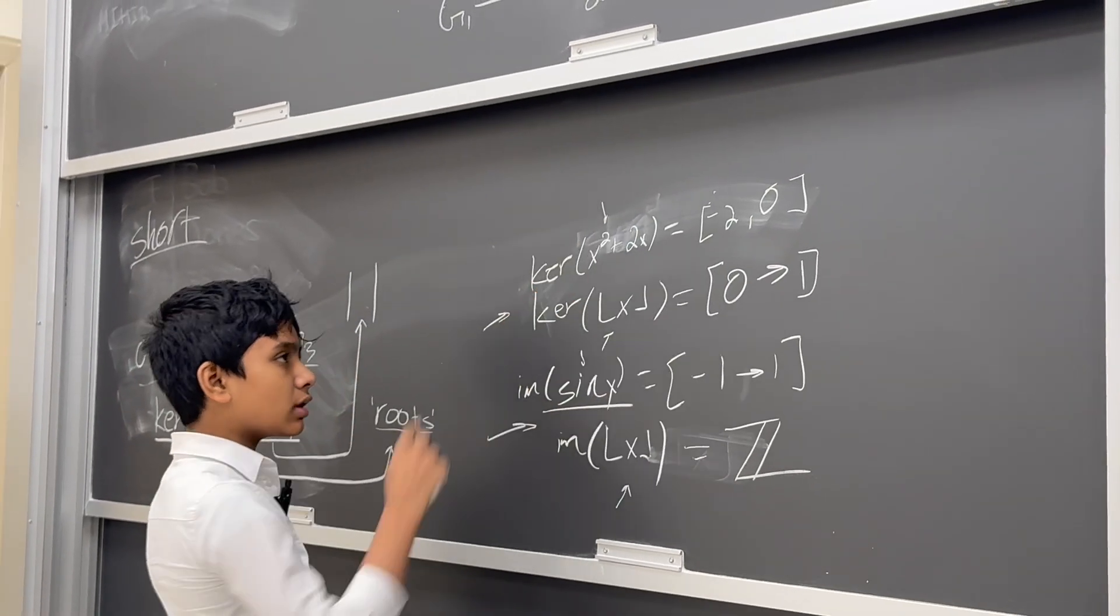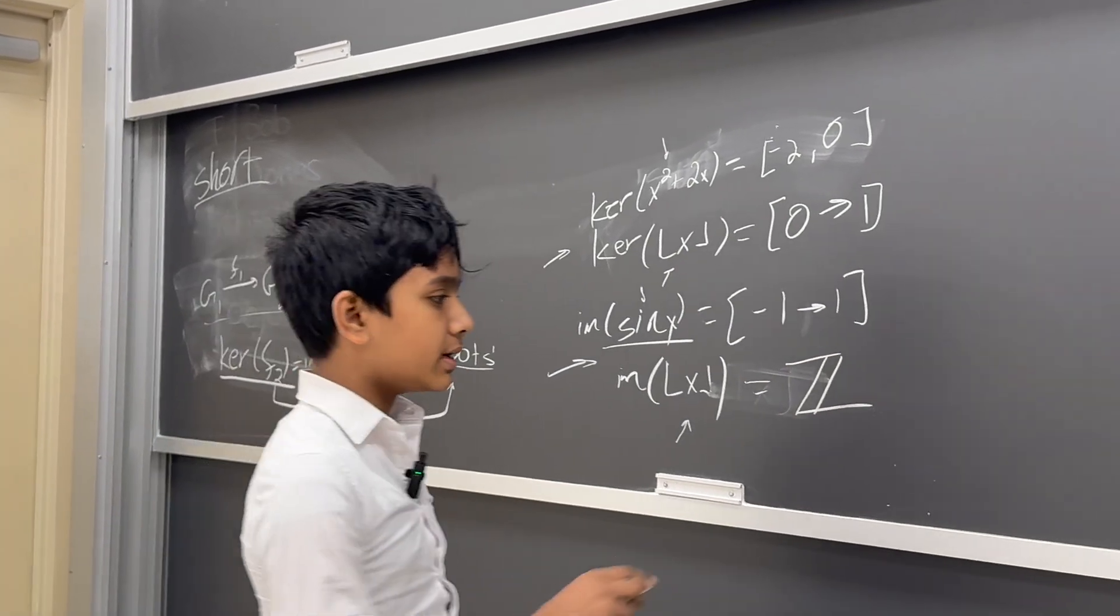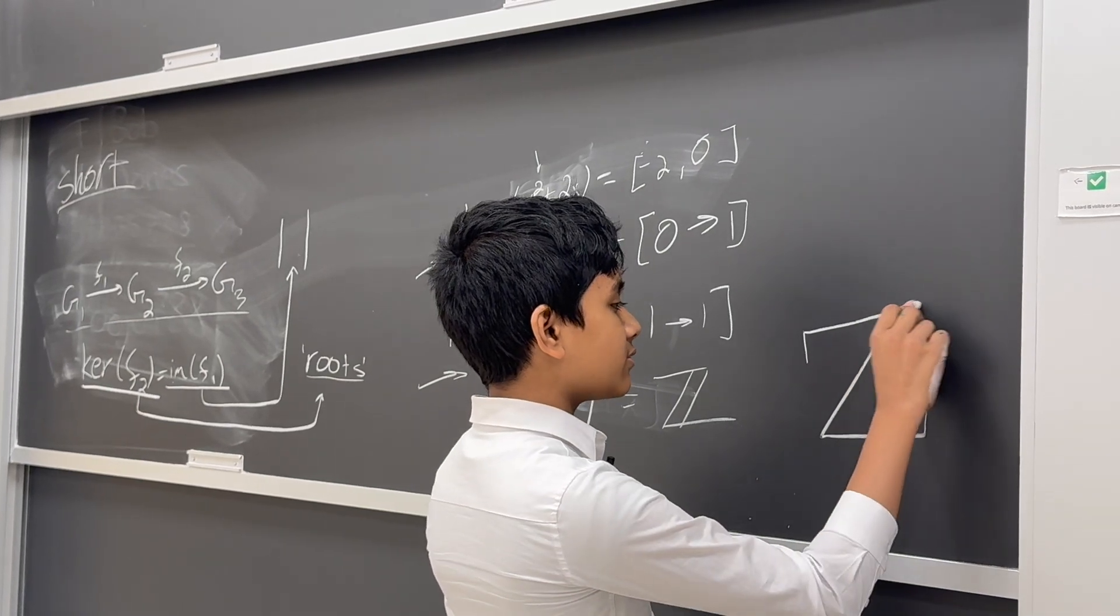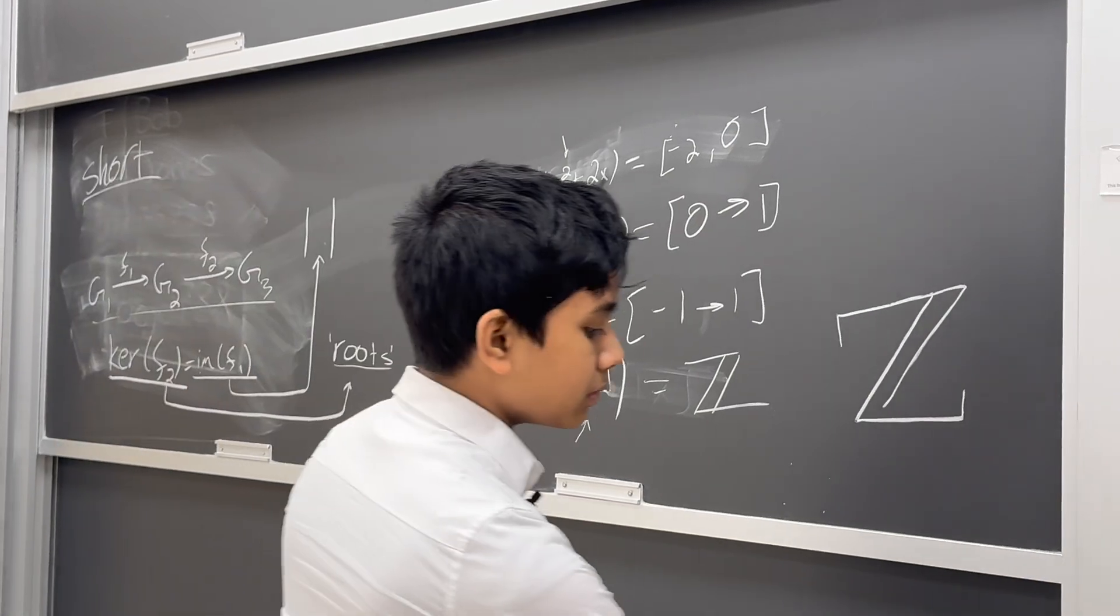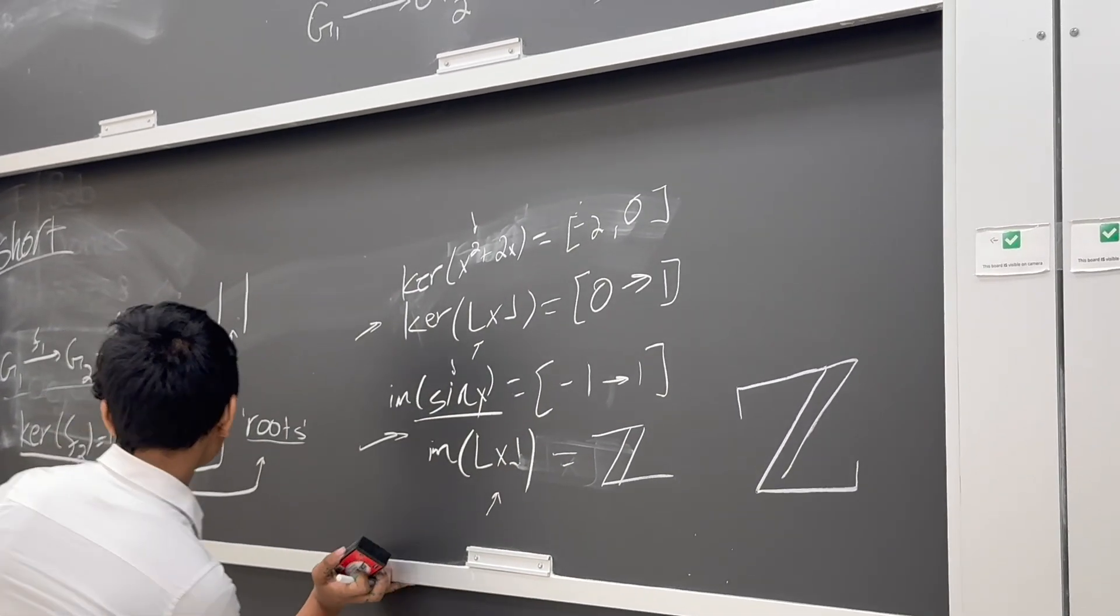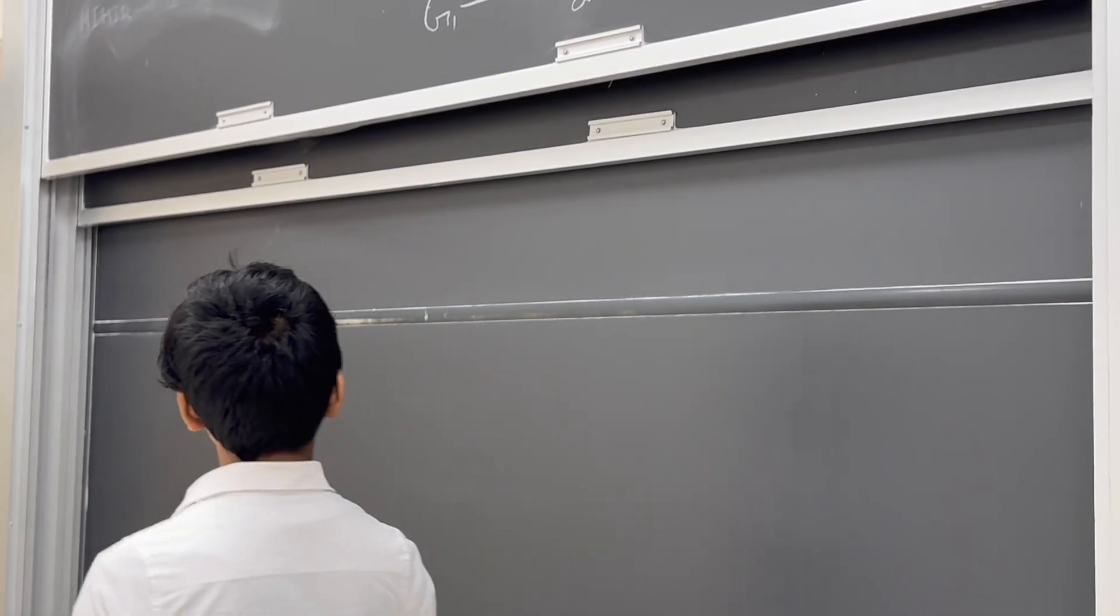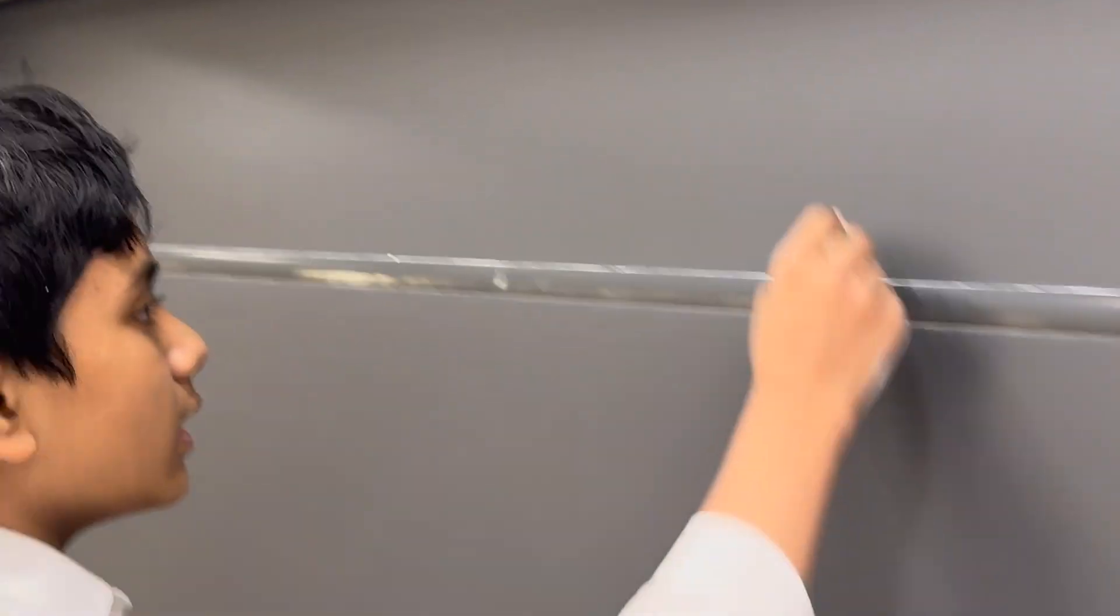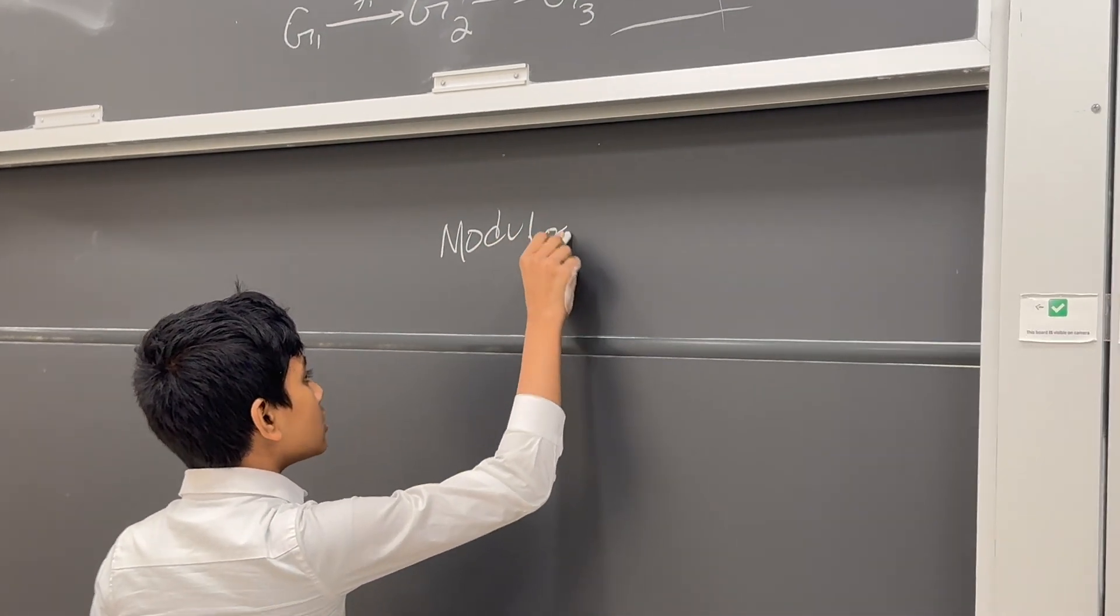Today I'm mostly going to be talking about functions between the integers, because that's easiest for me to visualize. So what's an example of a short exact sequence? Well, the best example is using modulos.